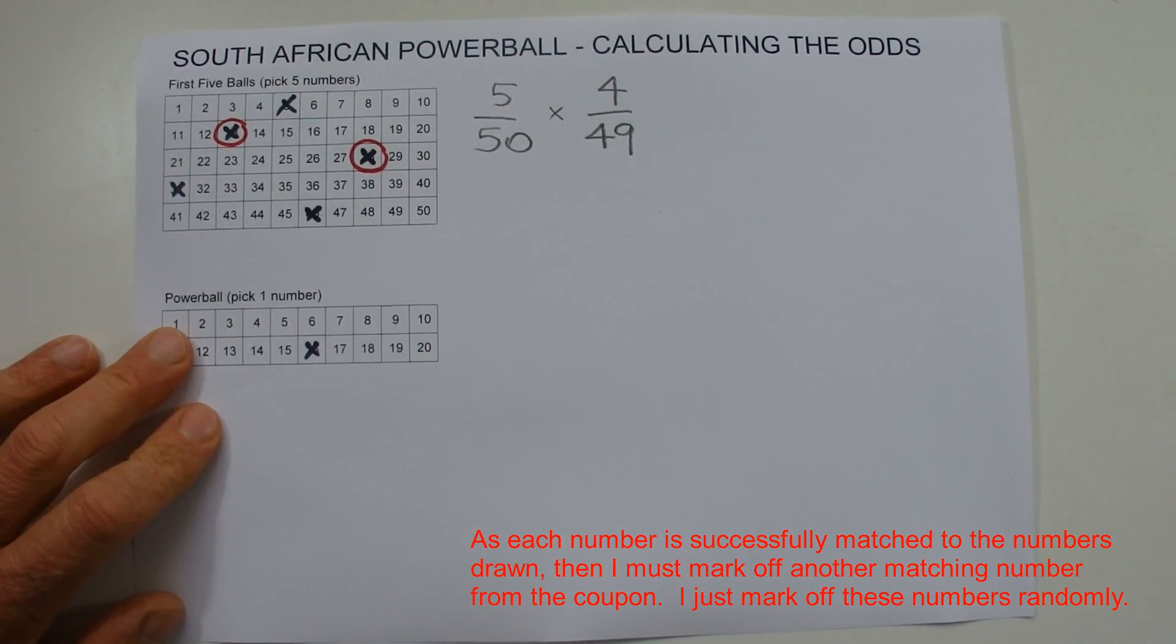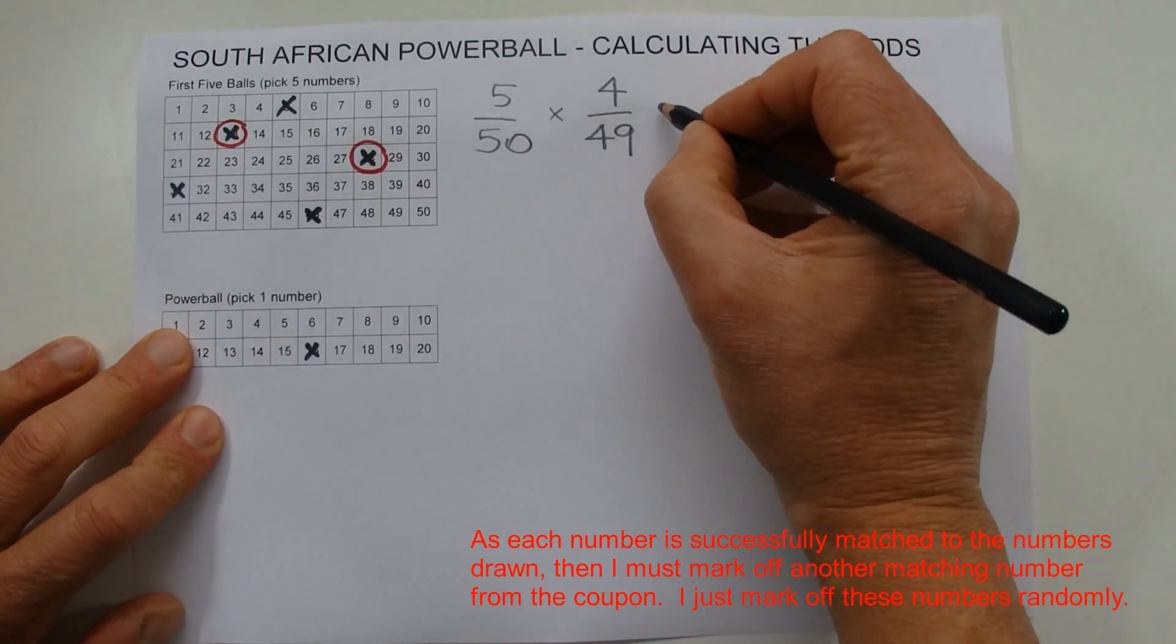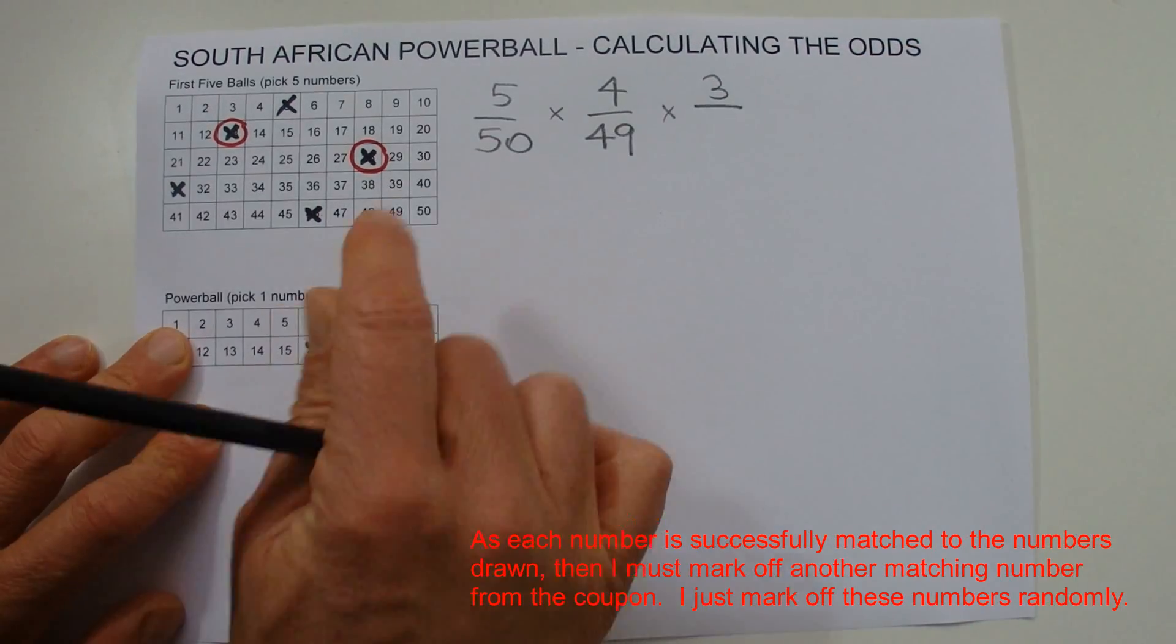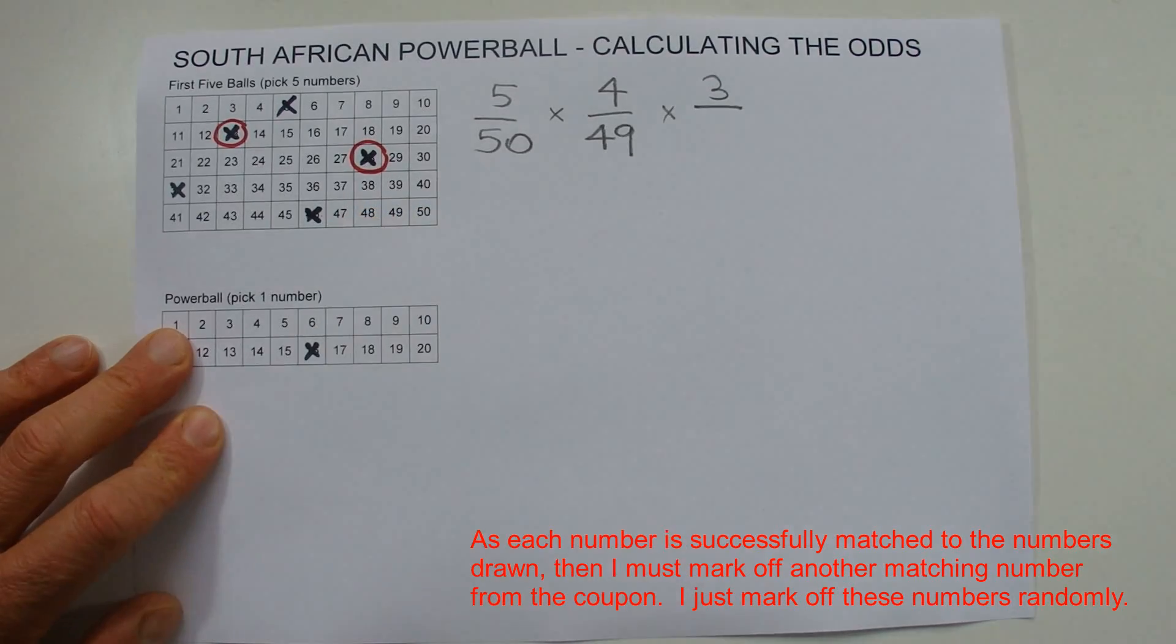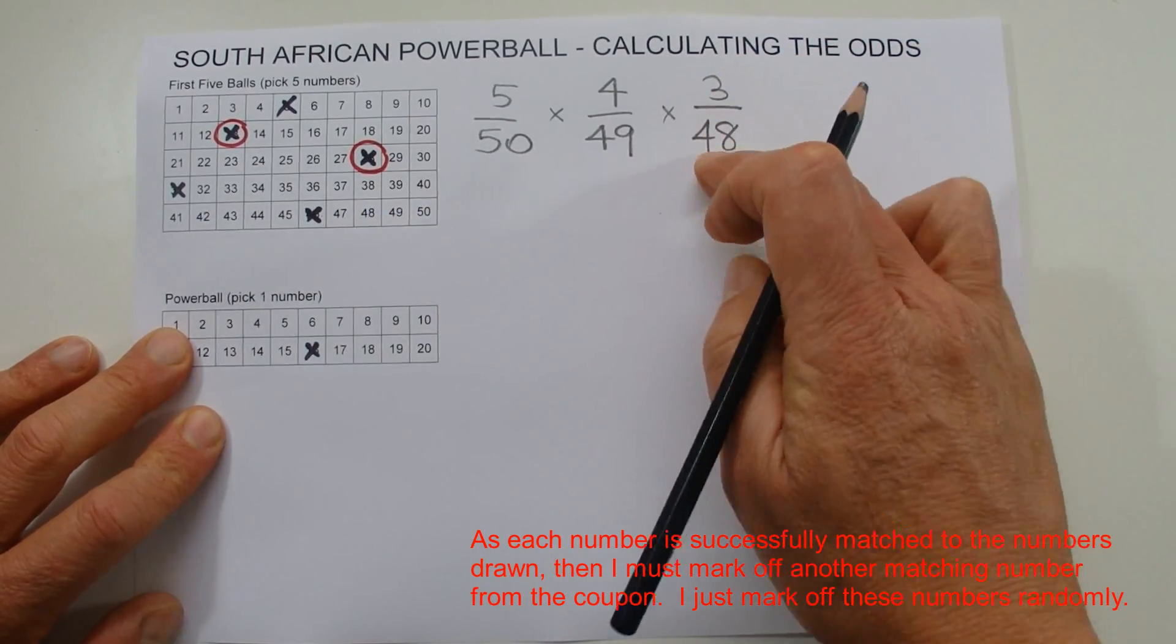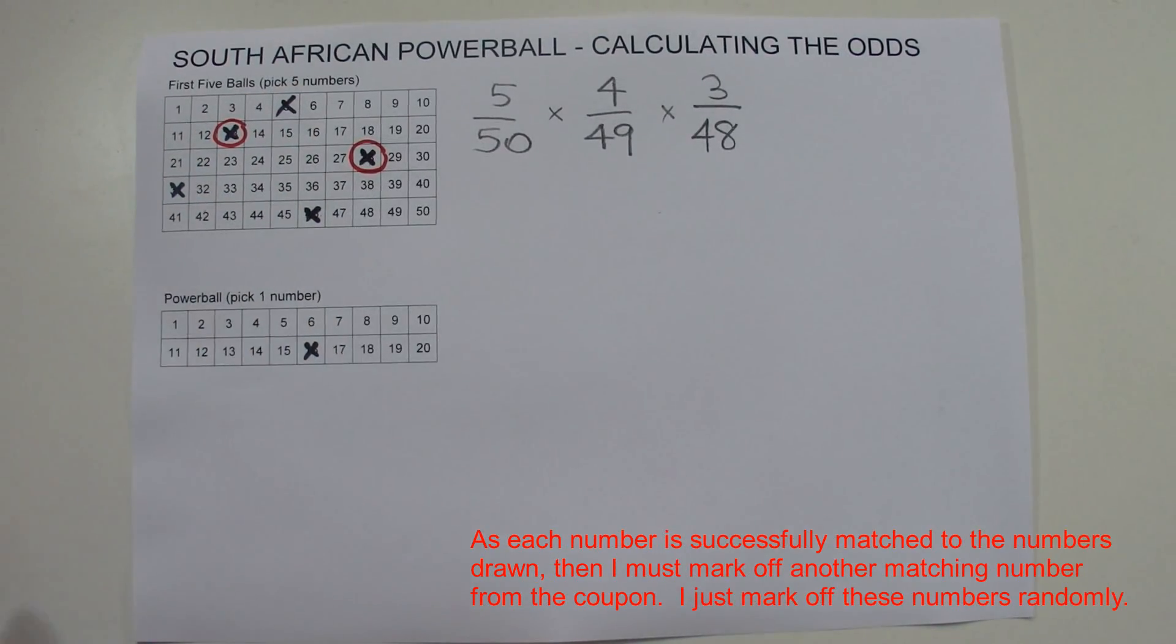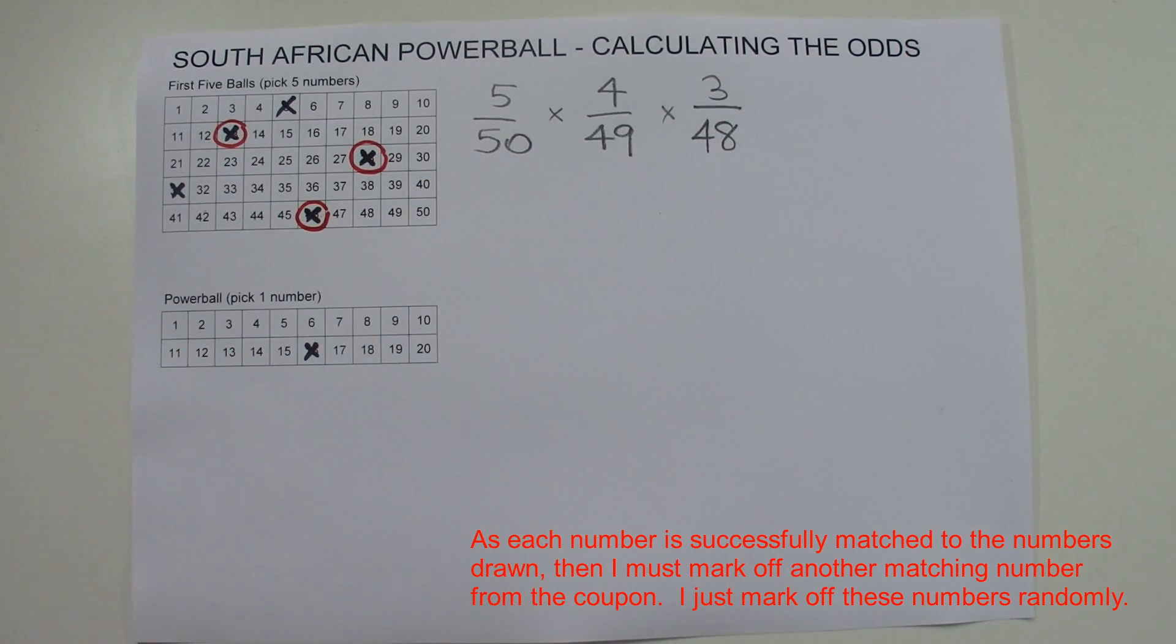And the same with the third number then. The third number, there's three numbers left on your coupon that you can match with the number being drawn. And now there's, of course, two numbers have already been drawn out of the barrel. You're left with 48 balls in the barrel to choose from. So you've got three chances in 48 then of matching the third number that's drawn on your coupon.